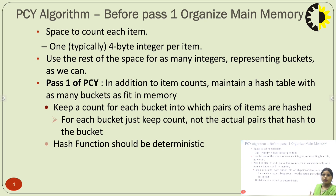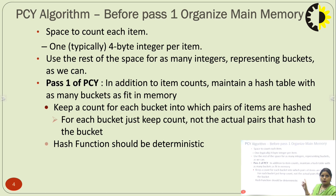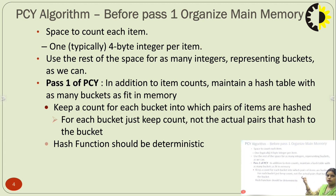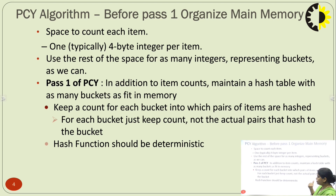Before pass 1, we must organize the main memory: allocate space to count each item using a 4-byte integer per item, and use the rest of the space to represent baskets. In pass 1 of PCY, in addition to item counts, we maintain a hash table with as many buckets as fit in main memory. For each pair of items, we keep a count for each bucket into which the pair is hashed — we count the buckets, not the actual pairs hashing to those buckets.